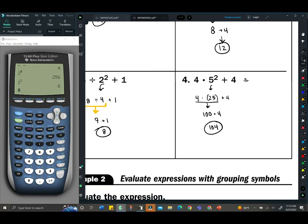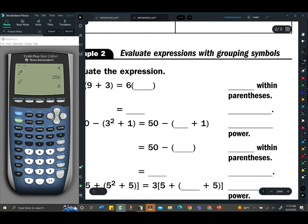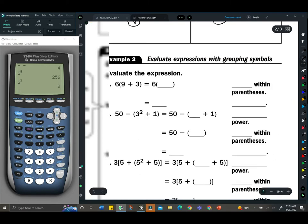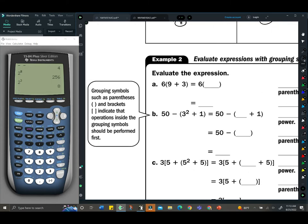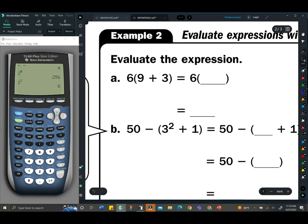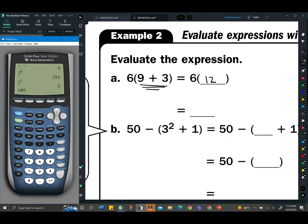Next up is evaluating expressions with grouping symbols. Now we're throwing in the P in parentheses - brackets are the same thing. When we have these, you have to do that operation first. So 9 + 3 is 12, then we do 6 times 12, which is 72.